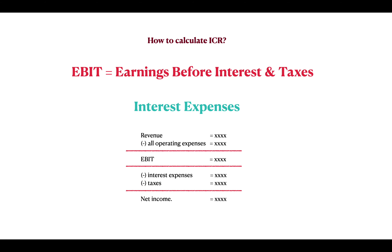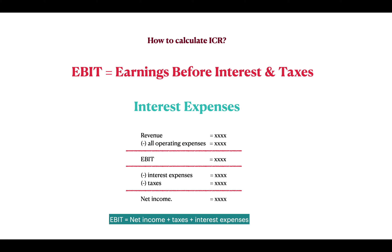Whatever is left after paying interest and taxes goes to shareholders as net income. Another way to calculate EBIT is to simply add taxes and interest payment to net income. You can find these numbers from a company's 10-K statement or from quarterly reports, but more conveniently you can also get them from Yahoo Finance. By simply dividing EBIT by the interest expense, you get the Interest Coverage Ratio, or ICR.